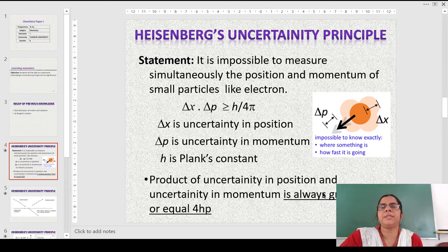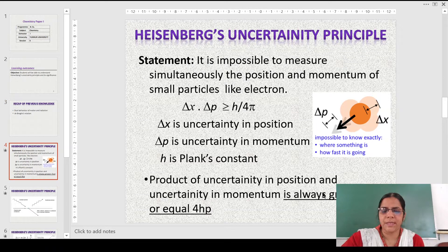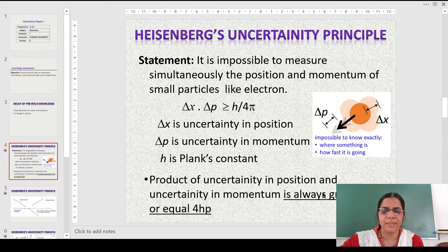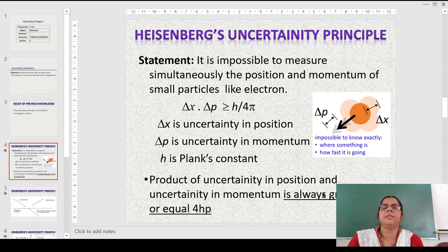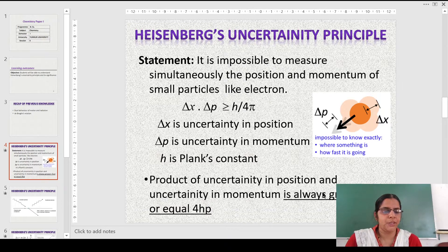Before going into the statement, let us understand what is the meaning of this. As a consequence of the dual nature of matter, in 1927, Werner Heisenberg gave this Heisenberg's Uncertainty Principle. It gives a relationship between the conjugate properties like position and momentum.